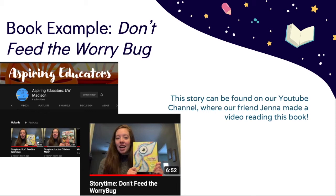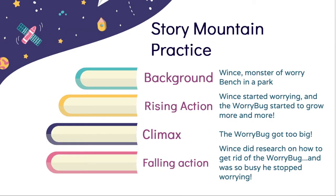Now we're going to do our practice. After reading that story, we can think about what was the background. We know the main character was Winn — the monster of worry — and the story started with him at a park on a bench. Then we find that when Winn starts worrying about a bunch of stuff, like his homework, his laundry, and needing new pants, the worry bug shows up and starts to grow. All of a sudden the worry bug got way too big and Winn starts really freaking out — he decides he needs to do something about this.